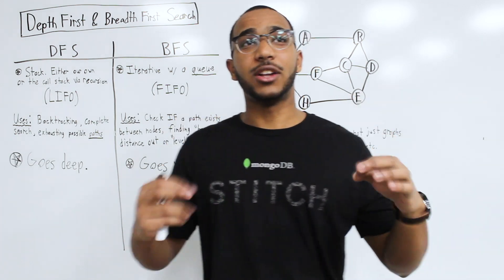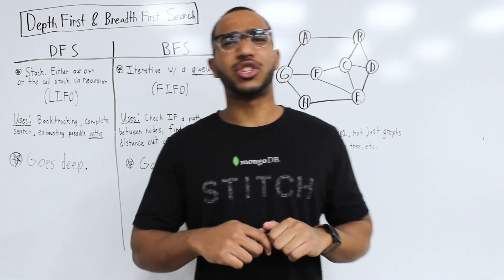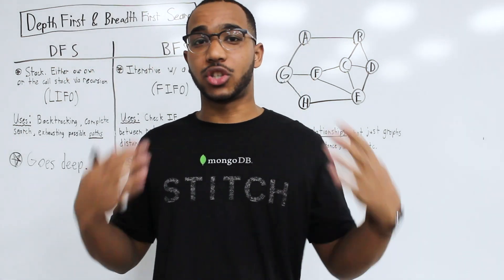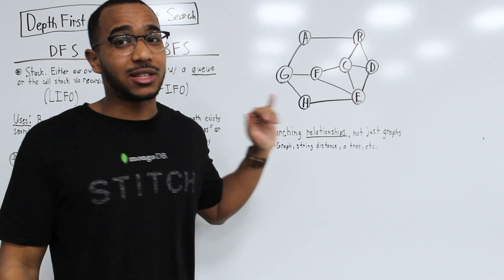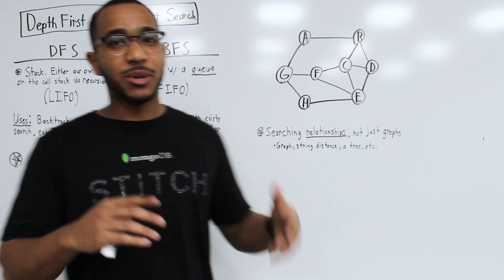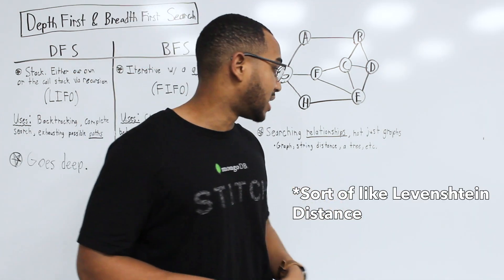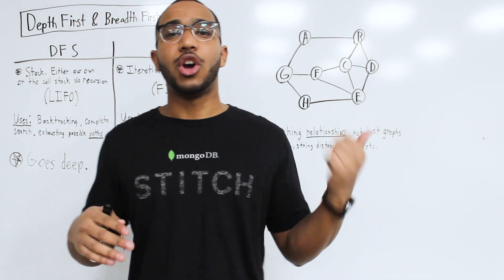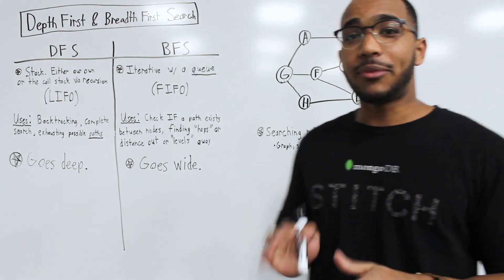We're going to talk about two fundamental search methodologies when you are searching not just graphs but relationships. Depth first and breadth first search are two fundamental ways to go about searching relationships. We could be searching graphs, searching distance between strings, or searching a tree. They're a way of approaching things, not just about graphs.